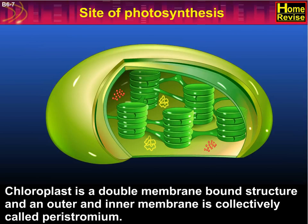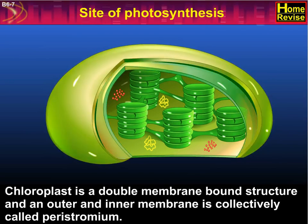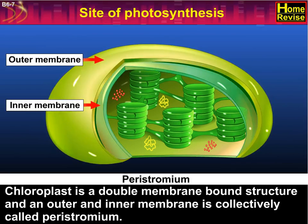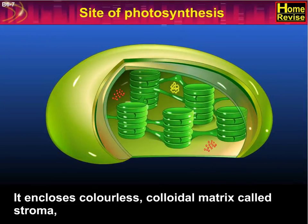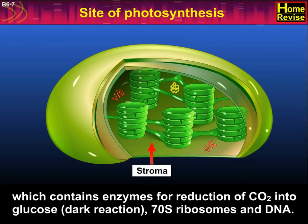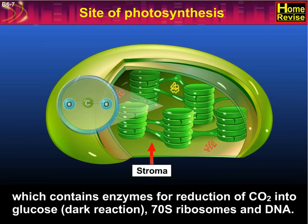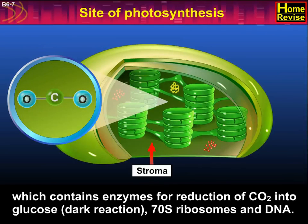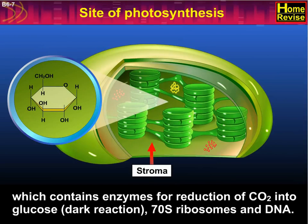Chloroplast is a double membrane bound structure, and the outer and inner membrane is collectively called peristromium. It encloses a colorless colloidal matrix called stroma, which contains enzymes for reduction of carbon dioxide into glucose, which is the dark reaction.